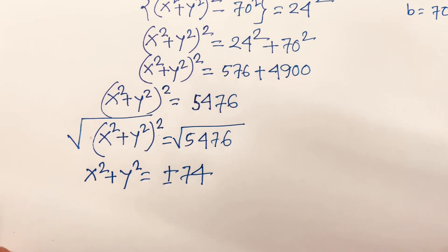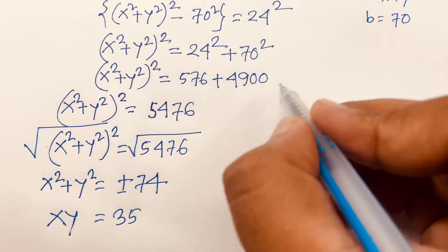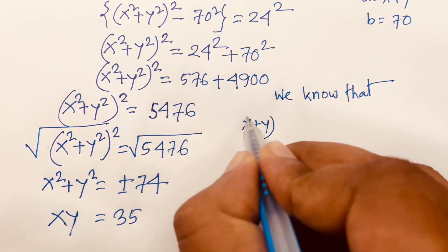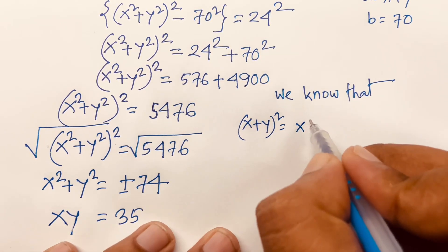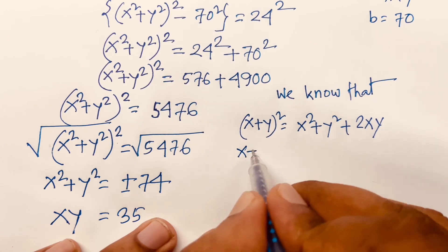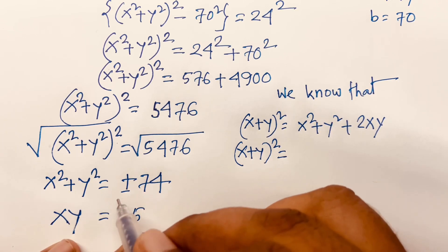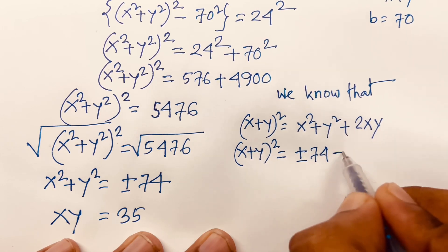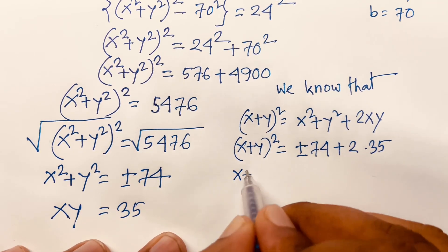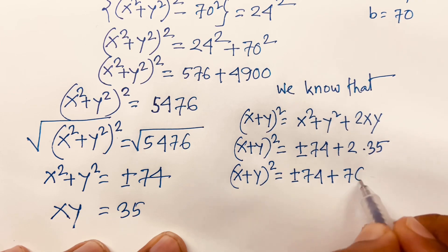Remember that our second equation is xy equals 35. Now we find (x + y)² equals x² + y² plus 2xy. I can say x² + y² is plus or minus 74, and 2 times xy equals 2 times 35, which is 70.